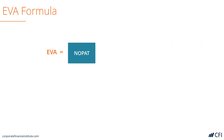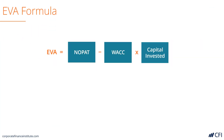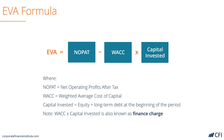Let's look closer at the EVA formula. It's equal to Net Operating Profit After Taxes, or NOPAT, which is essentially the unlevered net income of the business, minus the finance charge. The finance charge is equal to the weighted average cost of capital multiplied by the amount of capital that was invested. We're going to dig into each of these in more detail so you have a thorough understanding of each component.